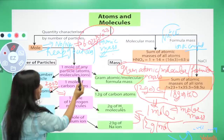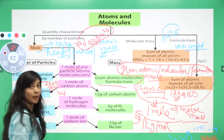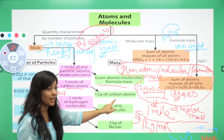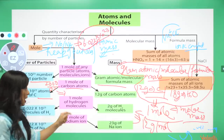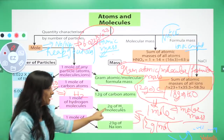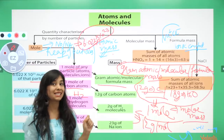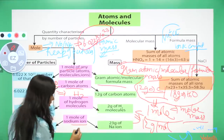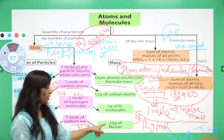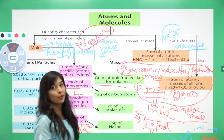One mole of any particle - whether atoms, molecules, or ions - will represent Avogadro's number of particles and correspond to gram atomic/molecular/formula mass. For example: 12 grams of carbon = Avogadro's number of carbon atoms. One mole of hydrogen molecule (H₂) = 2 grams = Avogadro's number of molecules (not atoms). For sodium ions (Na⁺): 23 grams of sodium ion will have Avogadro's number of ions - don't get confused, even though it's an ion, removing one electron barely changes the mass, so gram atomic mass still applies.